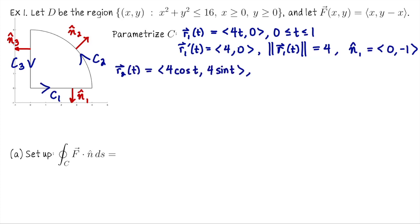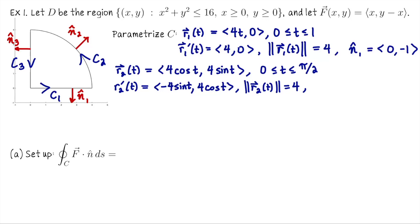C2 is part of the circle of radius 4, parametrized as (4 cos t, 4 sin t) for t ∈ [0, π/2]. The velocity vector is (-4 sin t, 4 cos t), with speed 4. Using the formula for the unit normal — switch coordinates and negate the second — we get (4 cos t, 4 sin t) divided by 4, leaving us with n = (cos t, sin t), the outward pointing unit normal along C2.